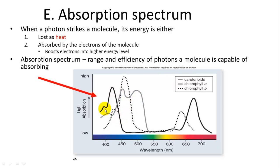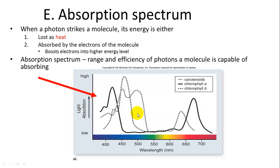There is some overlap between the absorption spectra of chlorophyll a, chlorophyll b, and carotenoids, but having all of them together gives a much wider absorption spectrum for capturing energy from light.